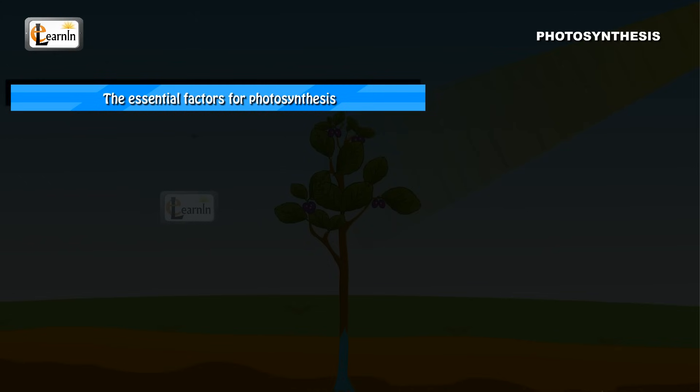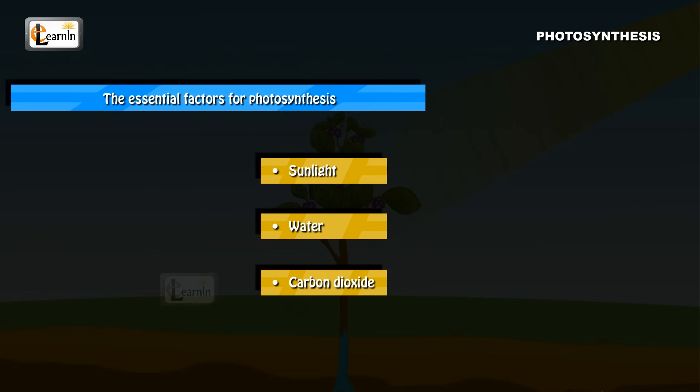So the essential factors for photosynthesis to take place include sunlight, water, and carbon dioxide.